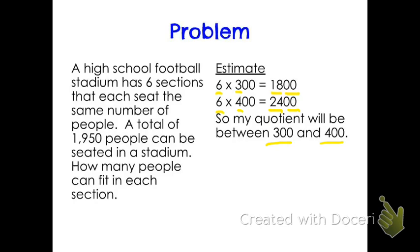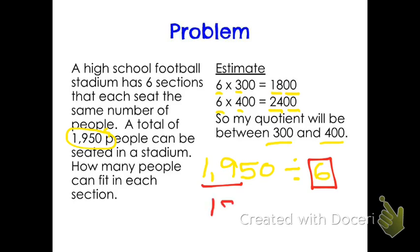Another way to estimate is to look at one thousand nine hundred and fifty divided by six. If you remember our lesson from last unit, we would underline our first two digits and then look at our six. I need a number that is easily divisible by six, so I'd go to my multiplication chart, look at my sixes, and find something close to nineteen. I know that six goes into eighteen evenly, so I could estimate this to be one thousand eight hundred divided by six, giving me an estimate of three hundred people. So my actual answer needs to be somewhere close to three hundred.